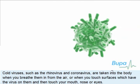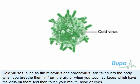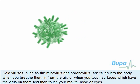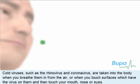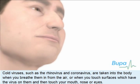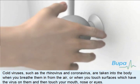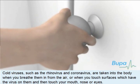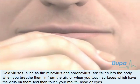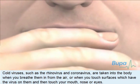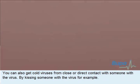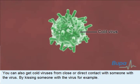Cold viruses such as the rhinovirus and coronavirus are taken into the body when you breathe them in from the air, or when you touch surfaces which have the virus on them and then touch your mouth, nose, or eyes. You can also get cold viruses from close or direct contact with someone with the virus, by kissing someone with the virus for example.